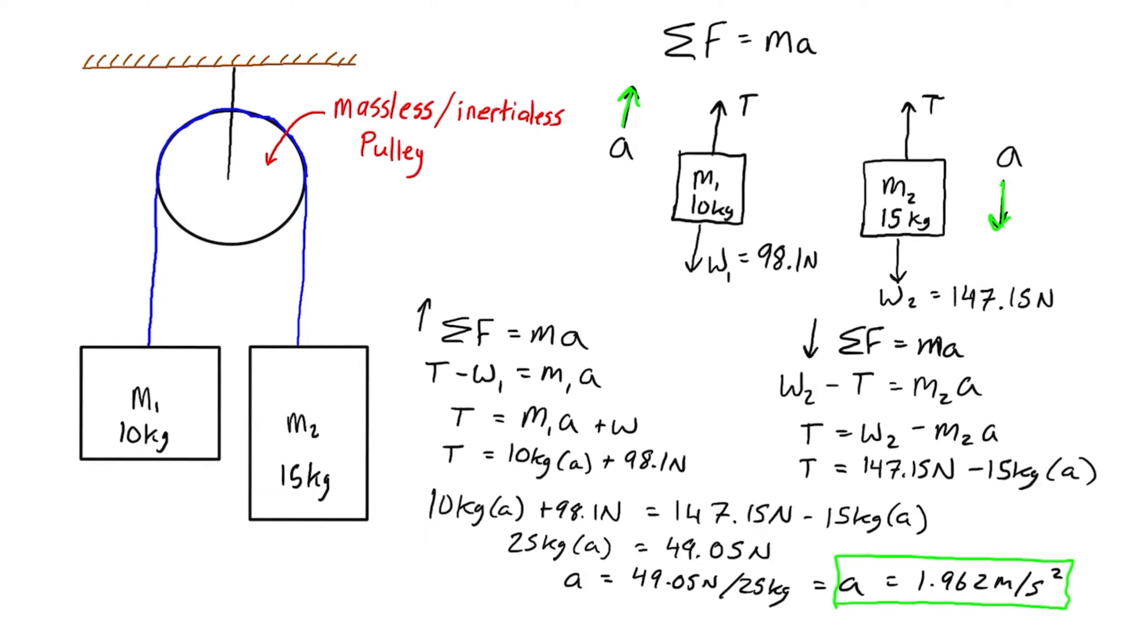That's the acceleration. The other thing we need to find is tension. We substitute acceleration back into each expression for tension. We have T equals 10 kilograms times 1.962 meters per second squared plus 98.1.